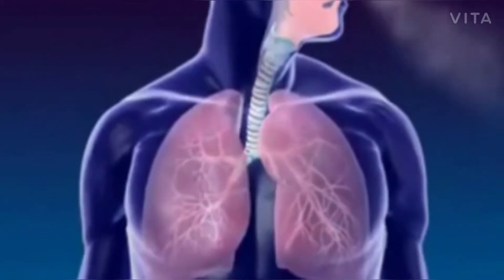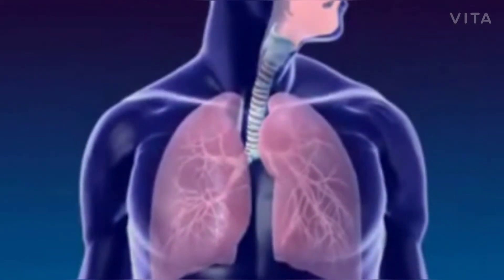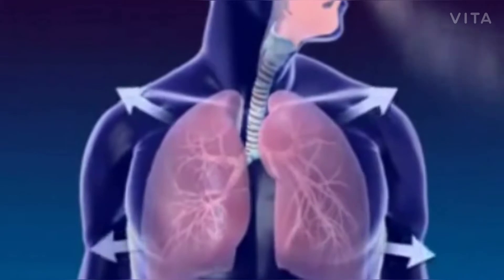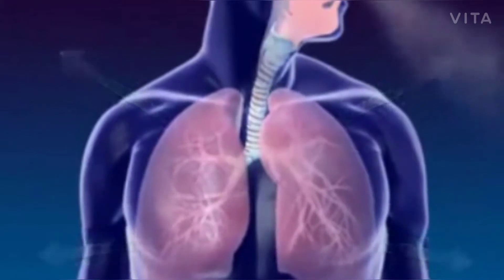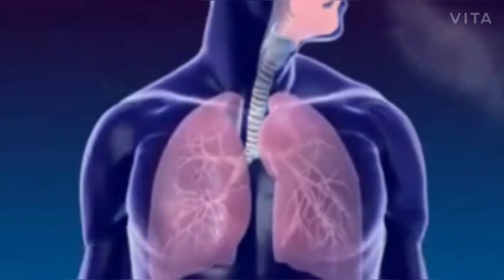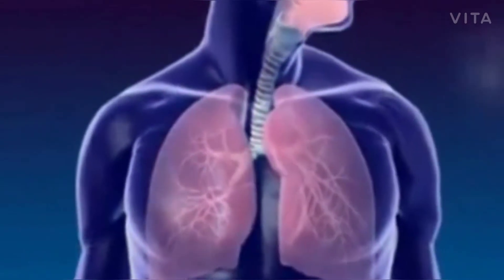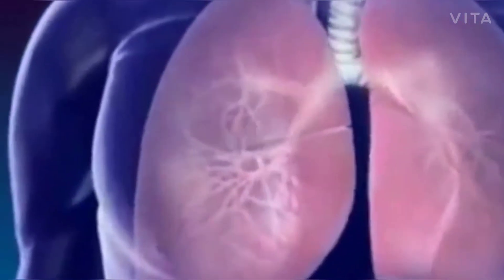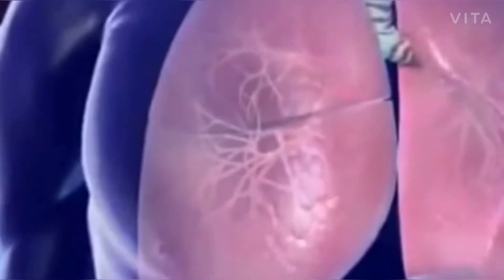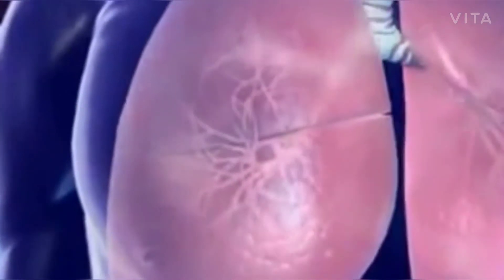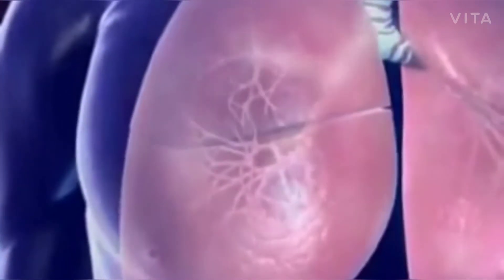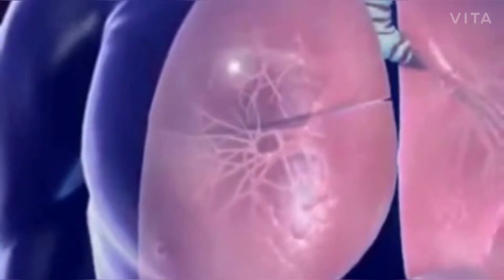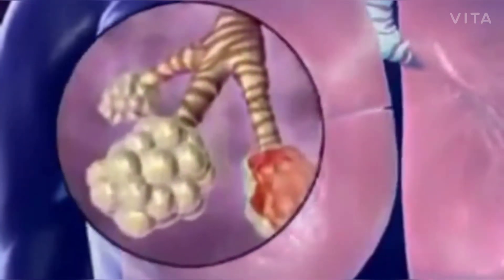Lungs are spongy tissue with alveoli and blood capillaries. Breathing occurs because of the expansion and contraction of the lungs. The bronchi carrying the air subdivide into smaller branches called bronchioles.